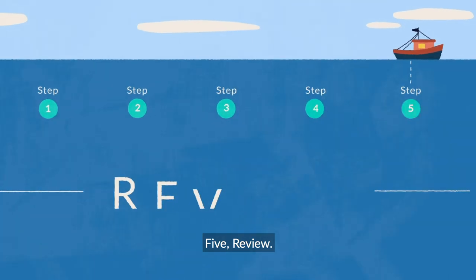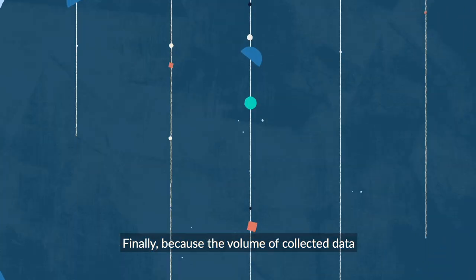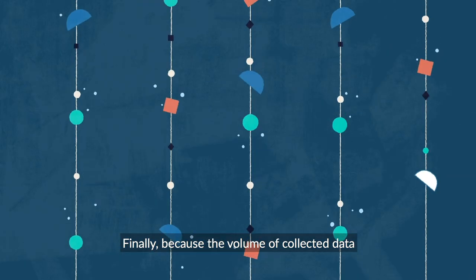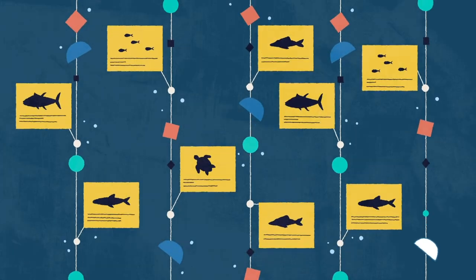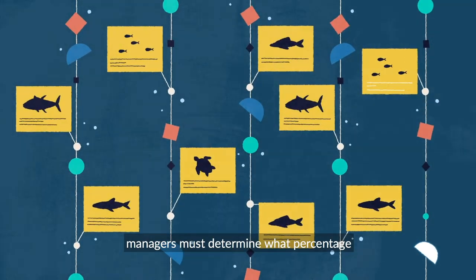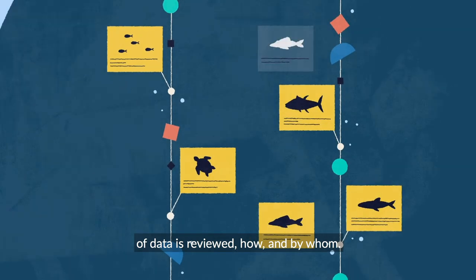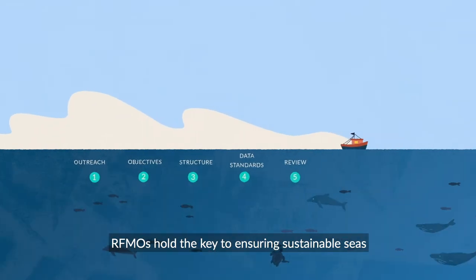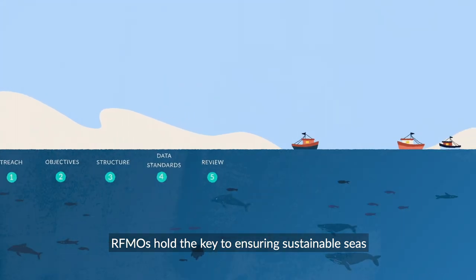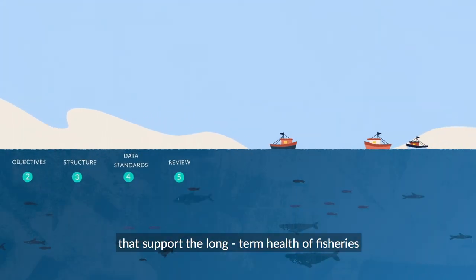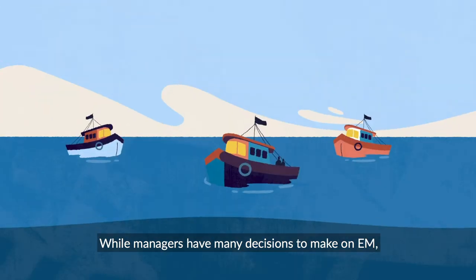Five: review. Finally, because the volume of collected data can simply be too high to review everything, managers must determine what percentage of data is reviewed, how and by whom. RFMOs hold the key to ensuring sustainable seas that support the long-term health of fisheries and the livelihoods that depend on them.